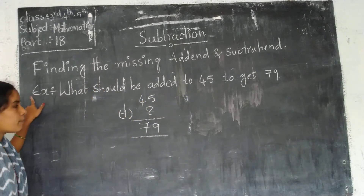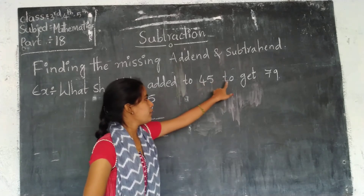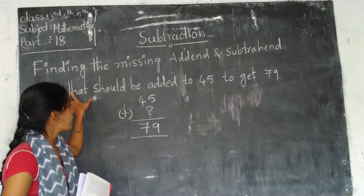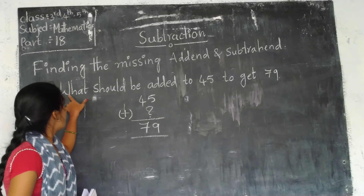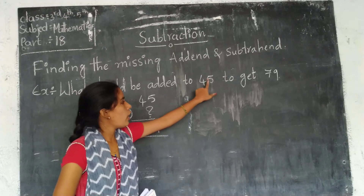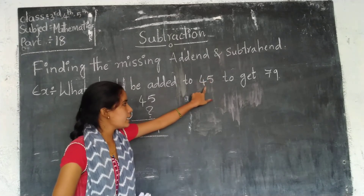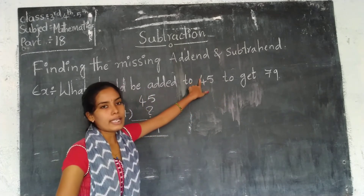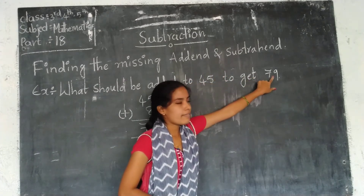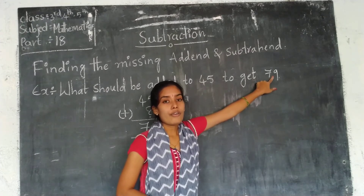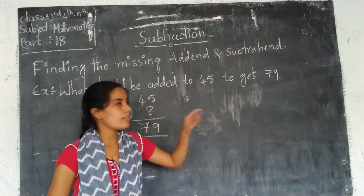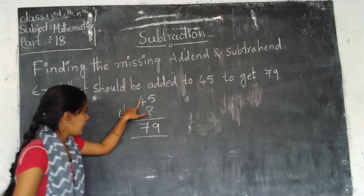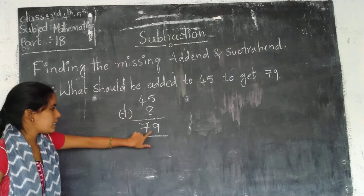Let's see an example. What should be added to 45 to get 79? First, observe the question carefully. What should be added to 45 to get 79? We have one addend, which is 45, and we need to find the other addend.